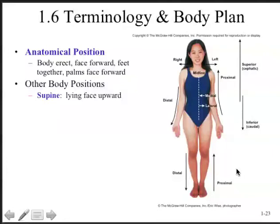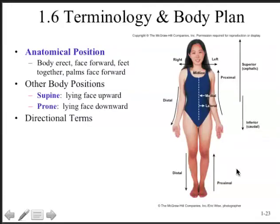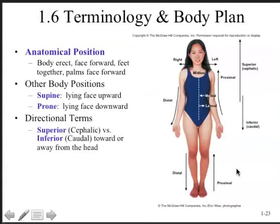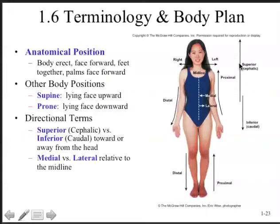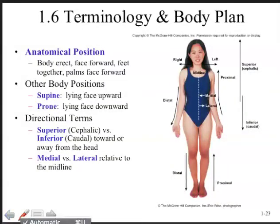Other body positions include supine, where we're lying with the face upward, and prone, where we're lying with the face downward. You can see some directional terms on the diagram that are important to know. Superior means towards the head or the cephalic region, while inferior means towards the tail or away from the head. Medial or lateral is relative to the body's midline, shown here as a dotted line.